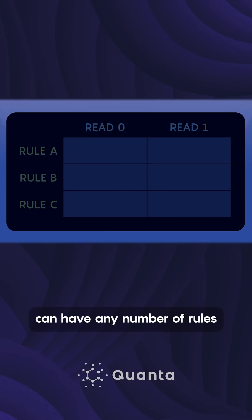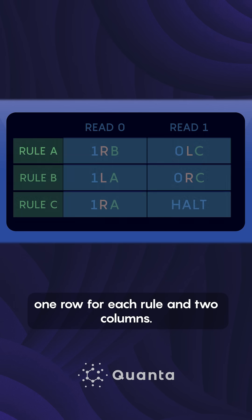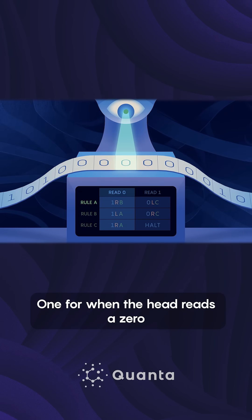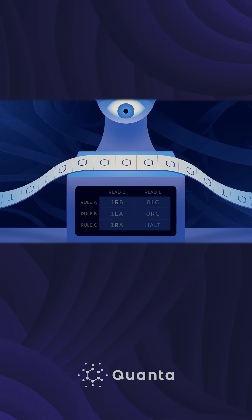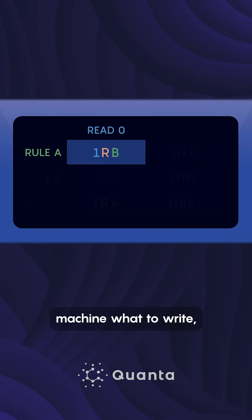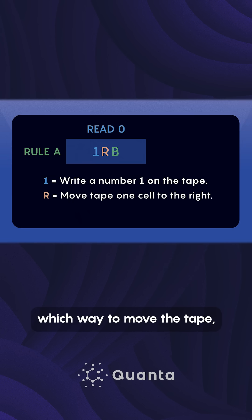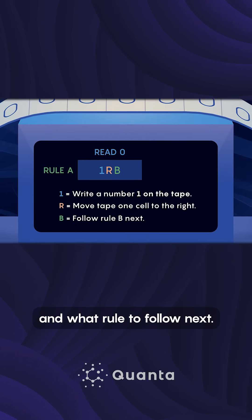A Turing machine's program can have any number of rules, as summarized in a table. This table contains one row for each rule and two columns — one for when the head reads a zero, and the other for when the head encounters a one. Each rule tells the machine what to write, which way to move the tape, and what rule to follow next.